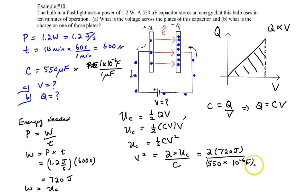If you multiply all this on your calculator you're going to get a rather large number, but then you're going to need to take the square root of that number and your voltage will come out to 1618 volts.